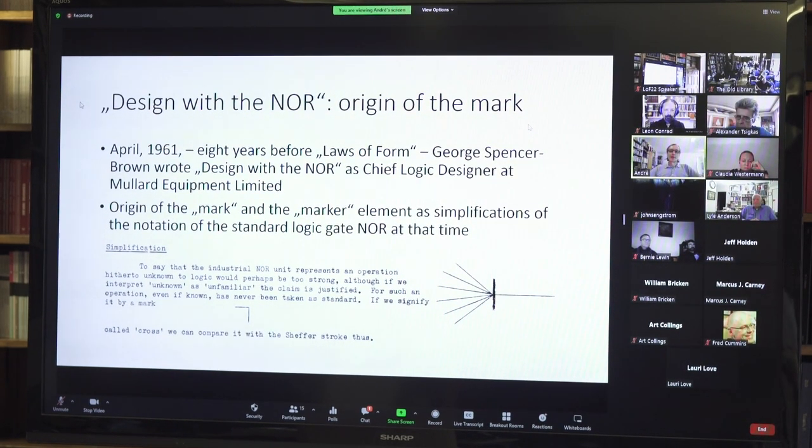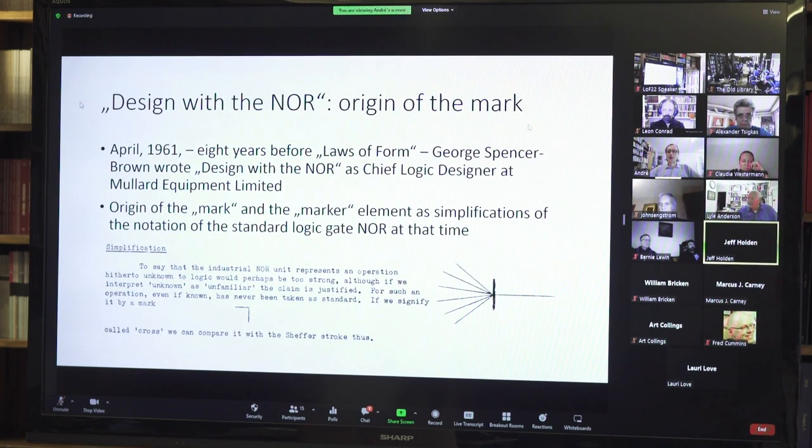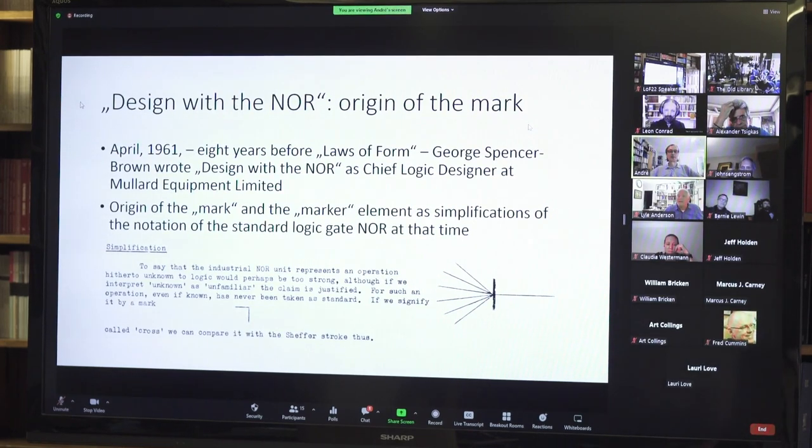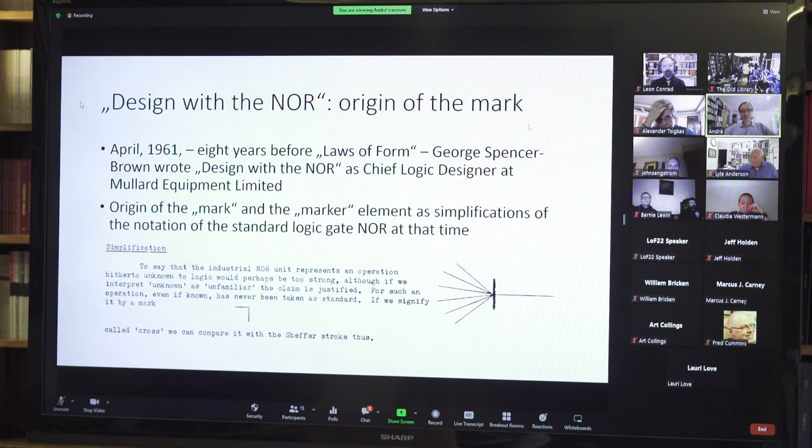I want to figure out the origin of the mark. In April 1961, eight years before Laws of Form, George Spencer Brown wrote a typescript called Design with the NOR. At that time, he was employed as chief logic designer at Mullard Equipment Limited, which was a company manufacturing logical gates. He invented the mark and the marker symbol simply as simplifications for writing NOR units.